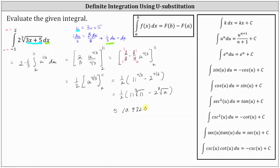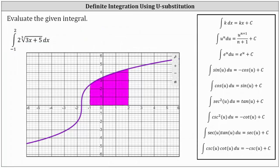Before we go, let's take a look at the graph of the integrand function over the closed interval from negative 1 to 2. Notice the area bounded by the function and the x-axis over the closed interval from negative 1 to 2 is above the x-axis. This indicates the value we found is equal to this shaded area. I hope you found this helpful.